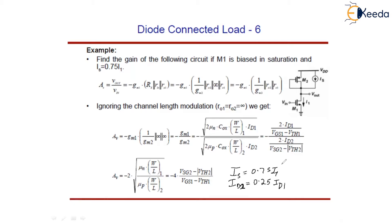Substituting ID2 equals 0.25·ID1 into the gain expression, we get the gain becomes negative 2 times the square root of (mu1·W/L1)/(mu2·W/L2). With the current ratio of 0.25·ID1 in the denominator and ID1 in the numerator, the gain becomes 4 times that quantity, removing the negative sign.